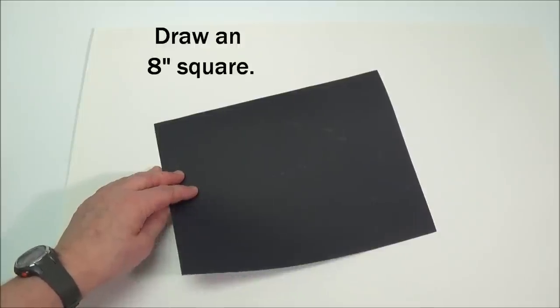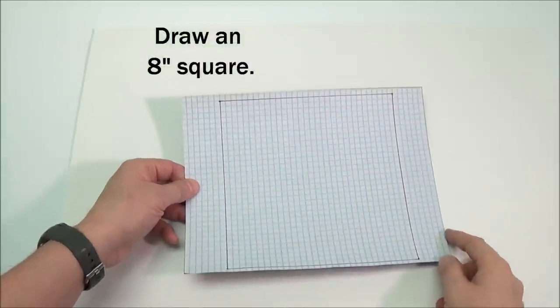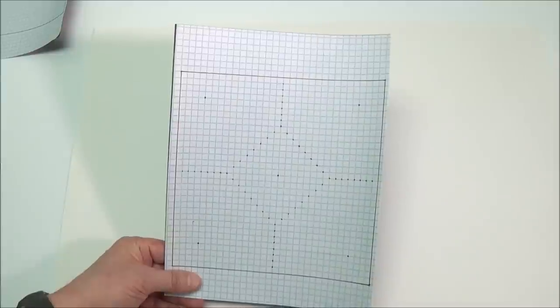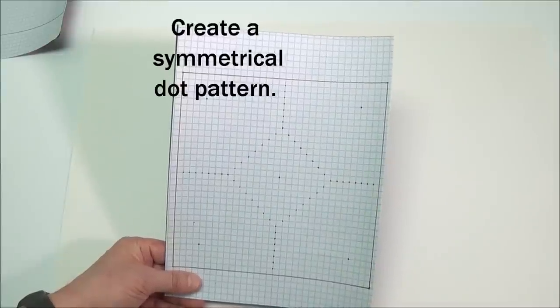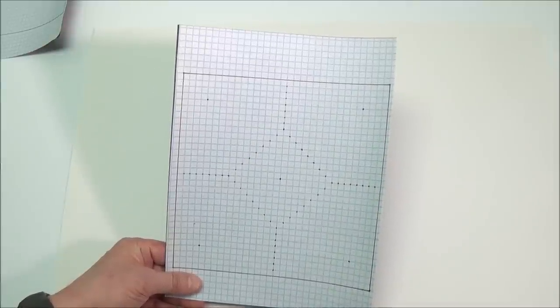Draw an 8 inch square on the graph paper. Using the graph paper lines as guides, create a symmetrical dot pattern design.